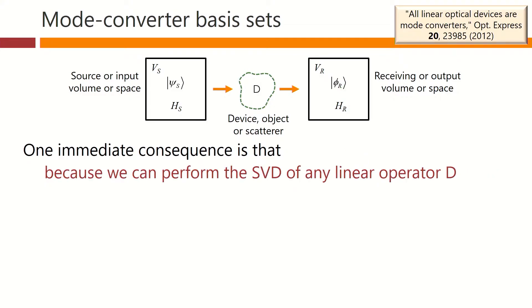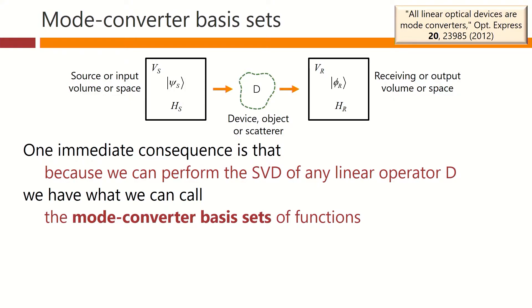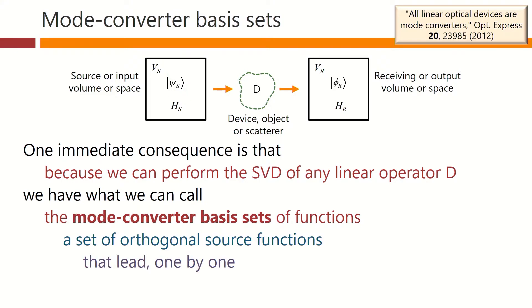One immediate consequence is that because we can perform the singular value decomposition of any linear operator, we have what we can call the mode converter basis sets of functions. These are, first of all, a set of orthogonal source functions, so functions psi s, that lead one by one to a set of corresponding orthogonal received waves, phi r here.